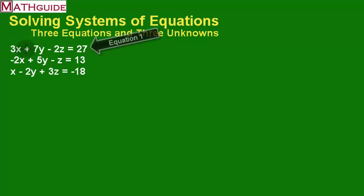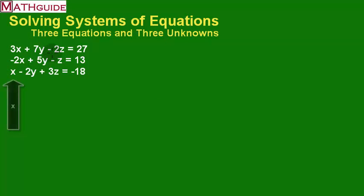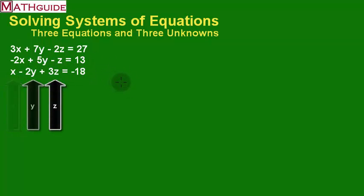Specifically, we're going to talk about how to solve a system of three equations and three unknowns. Here you'll notice I've got three equations - equation one, equation two, and equation three. I also have three unknowns, otherwise known as three variables.